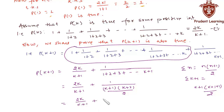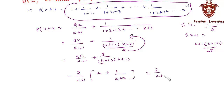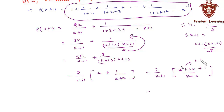Taking (k plus 1)(k plus 2) as the LCM, we get 2k(k plus 2) plus 2, all upon (k plus 1)(k plus 2). The numerator is 2k squared plus 4k plus 2, which you can factorize to get 2(k plus 1) squared.